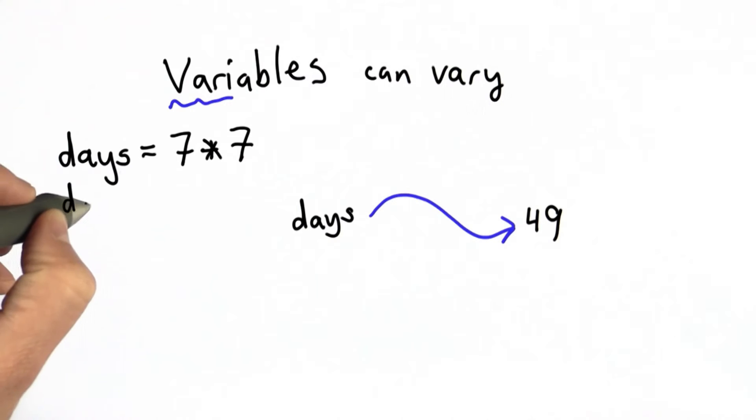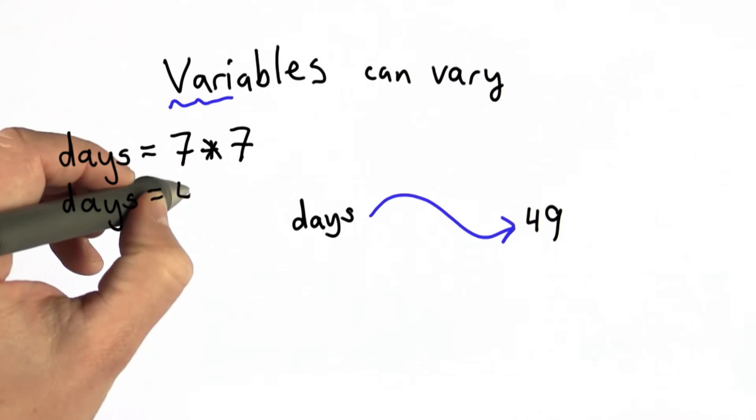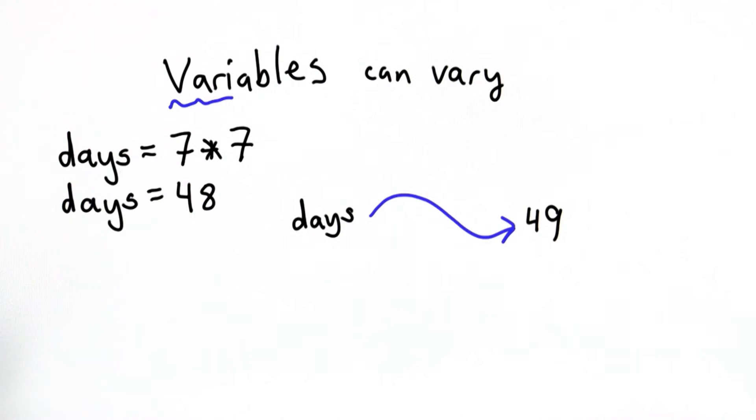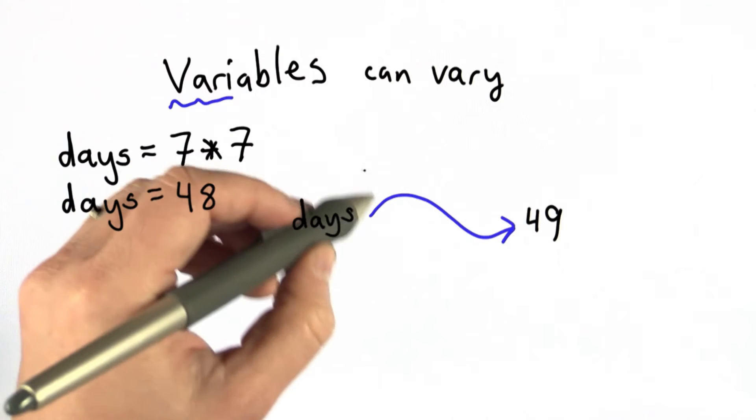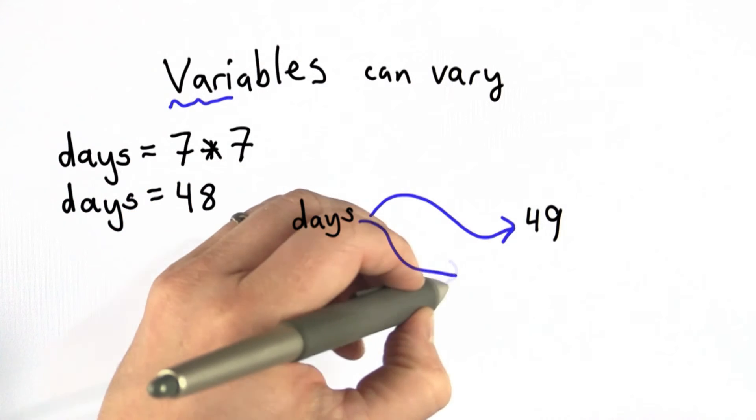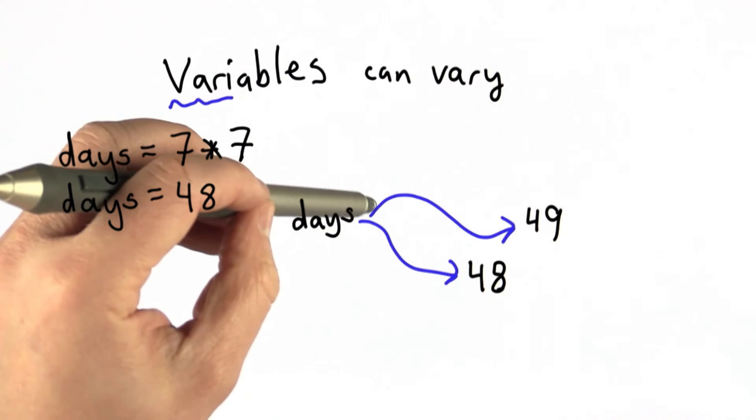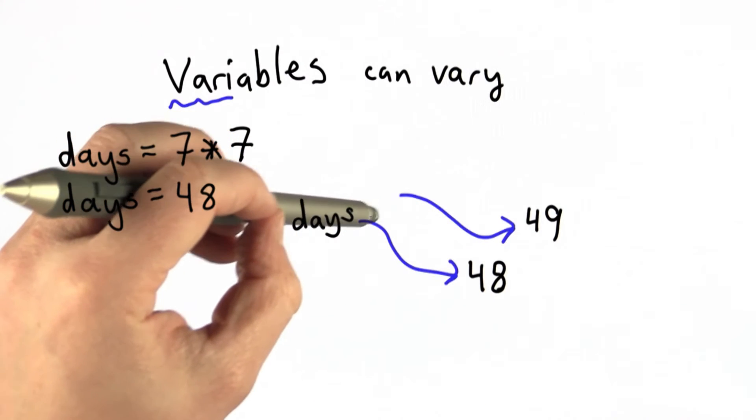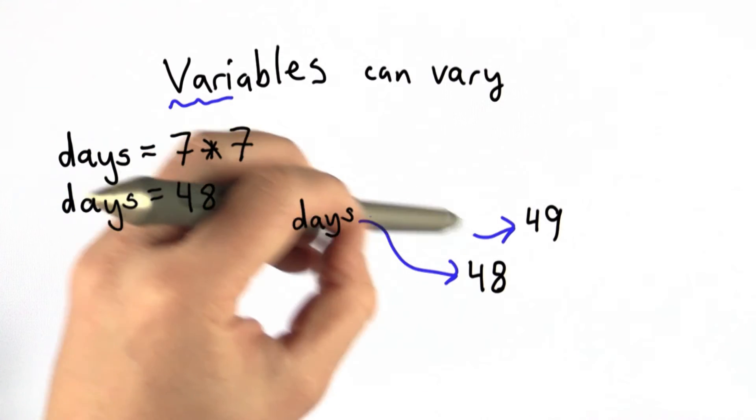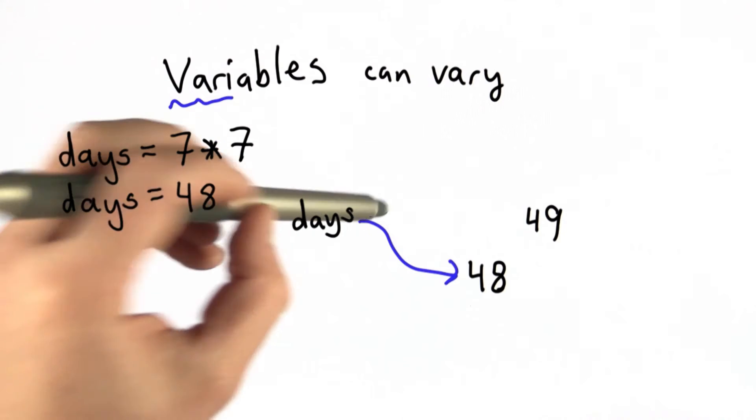If we do another assignment, let's say we have one less day, and in this case we'll assign 48 to days. Well, that's a new assignment. We already have a name days. It used to refer to 49, but after the new assignment, it's going to refer to this new value. Now it's going to refer to the value 48. The number 49 still exists, but days no longer refers to it. Now days refers to 48.